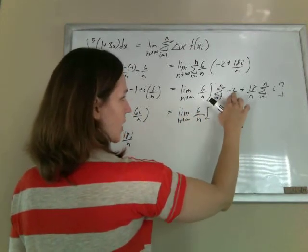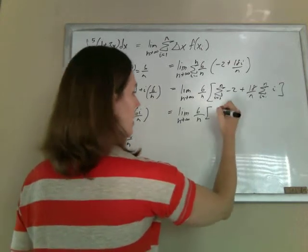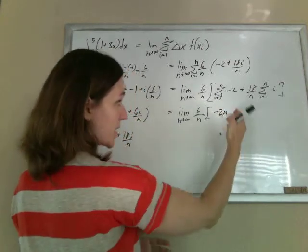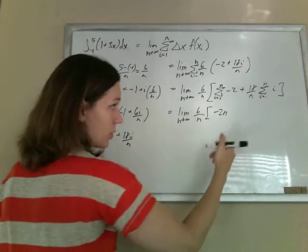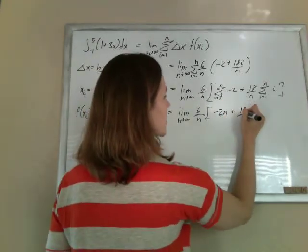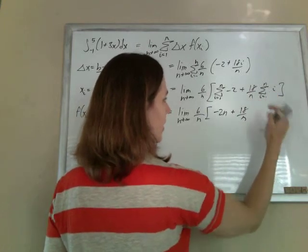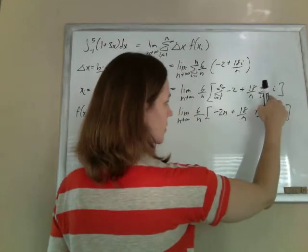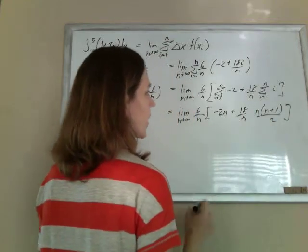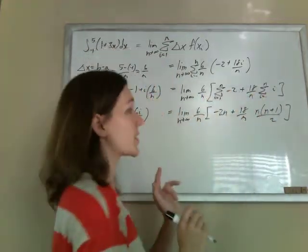So the sum of a constant is just that constant times n. So negative 2n. Which makes sense. If you're going to sum up a bunch of negative 2's, you have n negative 2's. For this one here, the sum of i, not as intuitive, but you want to memorize it as n times n plus 1 over 2. There's just a formula for that. Wonderful. No more sums for us. Now we just have to deal with this limit.